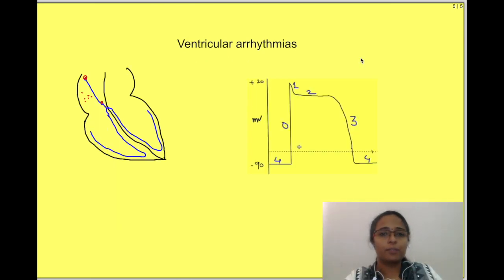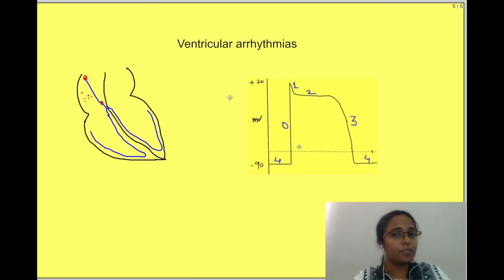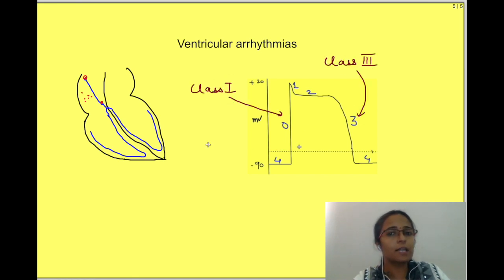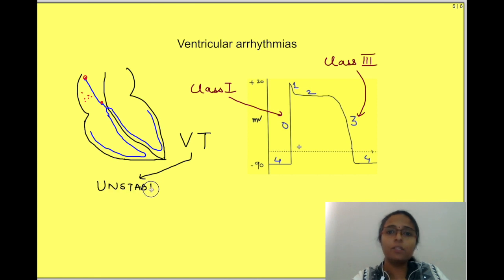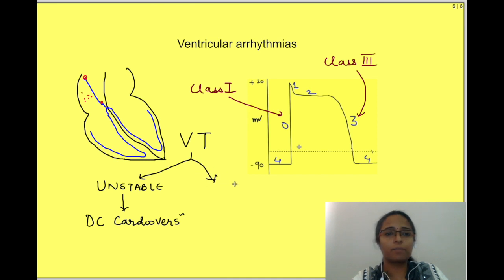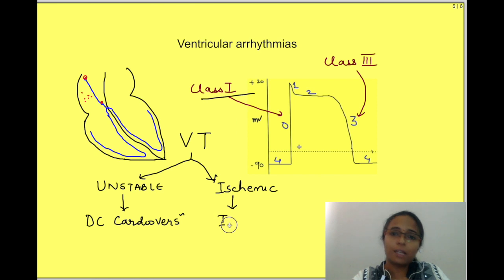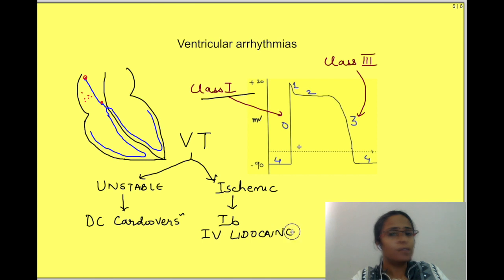For ventricular arrhythmias, class 1 drugs or class 3 drugs are used since they act on contractile cell action potential. For ventricular tachycardia in a hemodynamically unstable patient, electrical cardioversion is urgently required to revert to sinus rhythm. If ventricular tachycardia arises in ischemic tissue, class 1b drugs — specifically lidocaine given intravenously — are used, as class 1b drugs are particularly effective for arrhythmias arising in ischemic tissue.